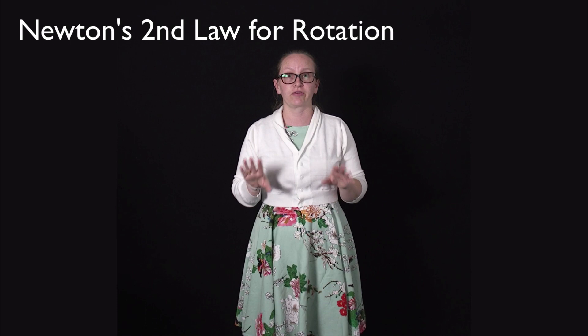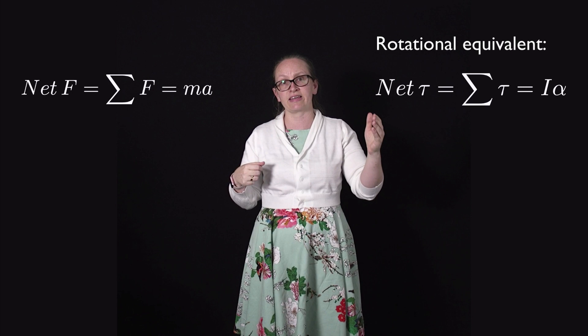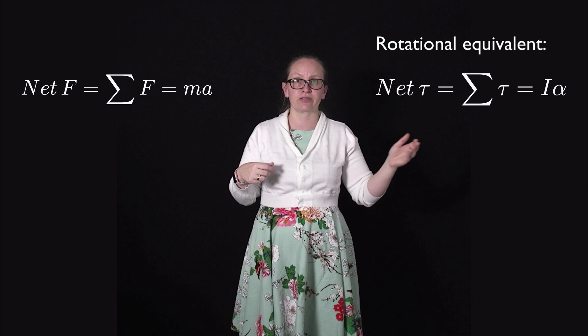Now we look at Newton's second law for rotation. For translation: net force = ma. For rotation, the analogous equation is: net torque = sum of torques = I·alpha, where I is the moment of inertia and alpha is the angular acceleration. Let's consider the simplest case — a massless rod of length r with a point mass m on the end with a force applied.